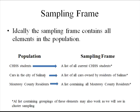If your population was cars in the city of Salinas, you would need a list of all cars owned by residents of Salinas. If your population was Monterey County residents, then you would need a list containing all Monterey County residents, or groupings of these residents. You need a list of all your sampling units to do a probability sample — that's what makes probability sampling difficult in some cases, because it's hard to get a good sampling frame.